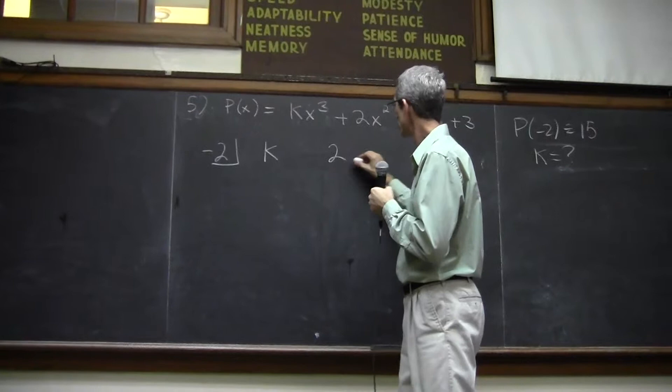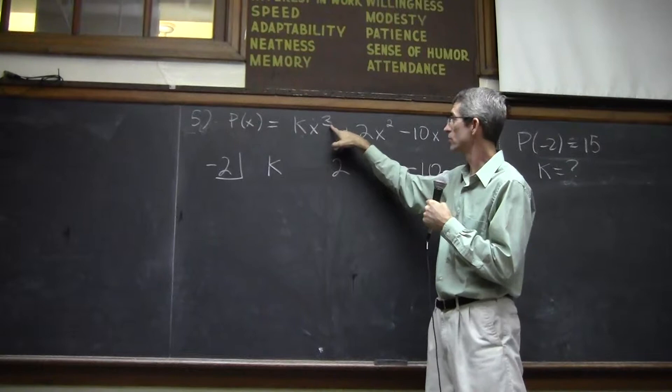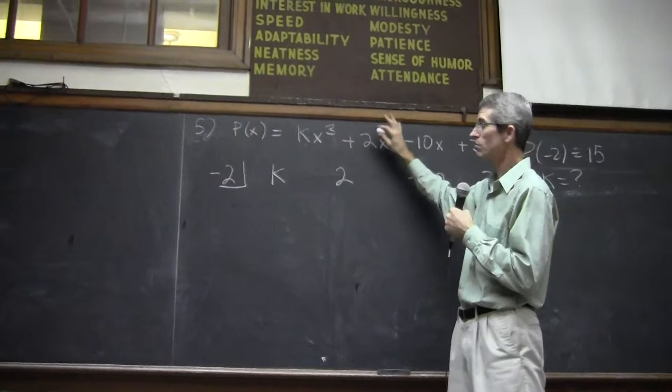And don't forget you have to check to make sure you have a third term, a second term, a first term, and then a constant. And if there was one of these missing, what would you do? Right, that's right. Put in a 0. We're all good.